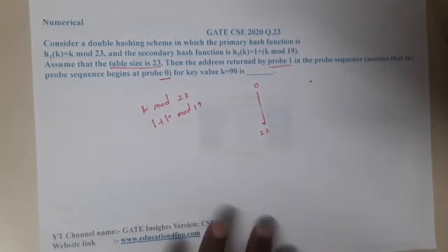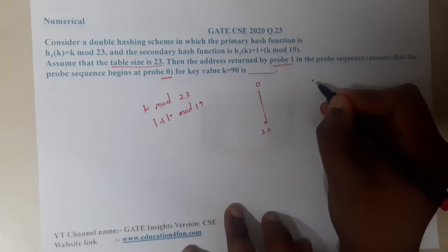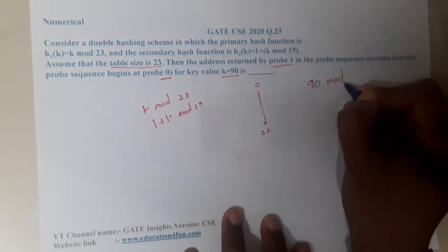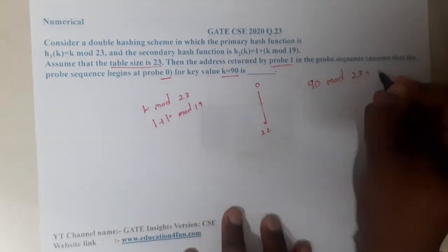Let us solve for key k = 90. What is the value of 90 mod 23? It is nothing but 21.